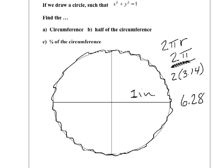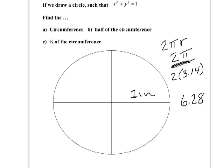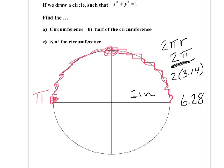If the entire circumference is 2π, then half the circumference — going from one side to the other — would be π in length, or about 3.14 inches. And one fourth of the circumference would be π over 2, because a fourth of the way is half of π.